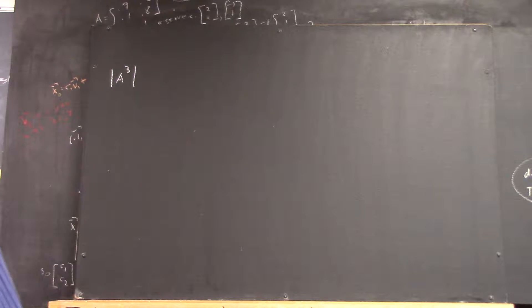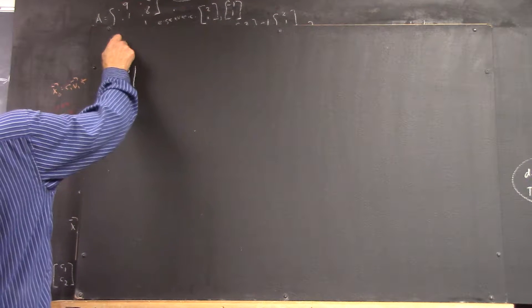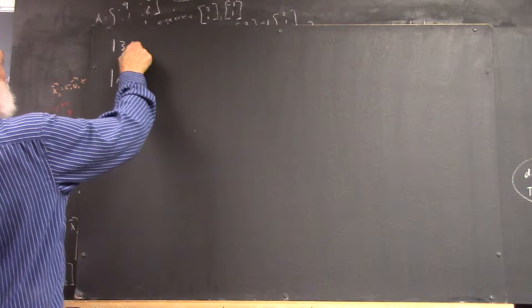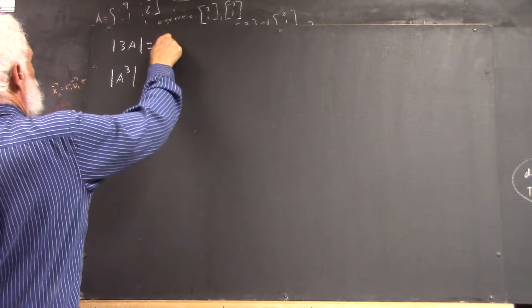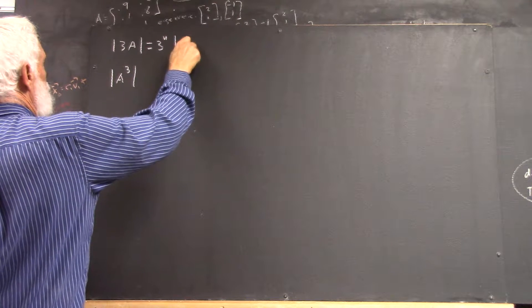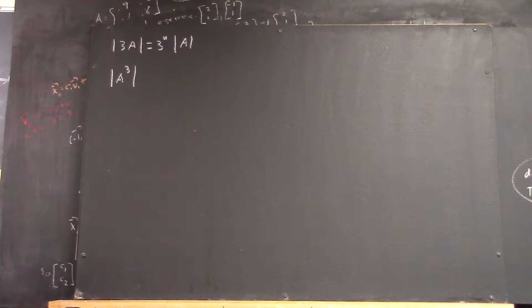And I'm going to write out a contrast here. The determinant of 3A equals 3 to the n times the determinant of A, where n is the order of the matrix.